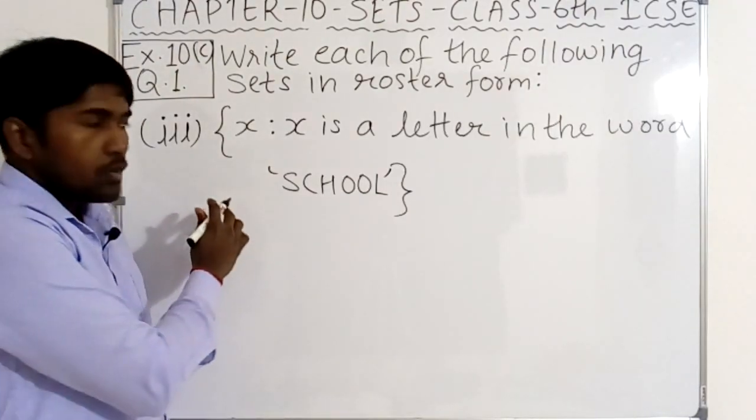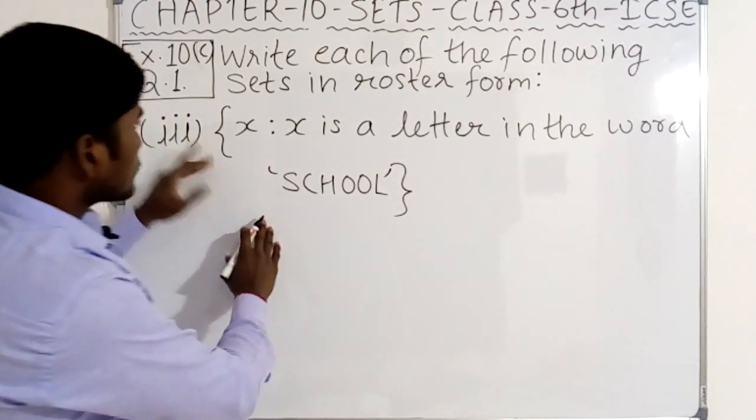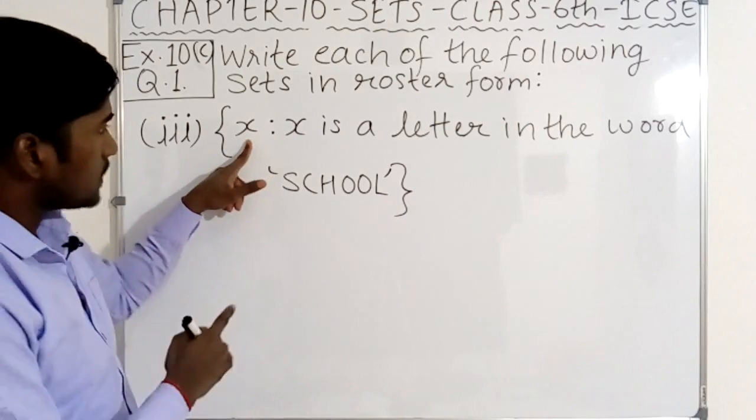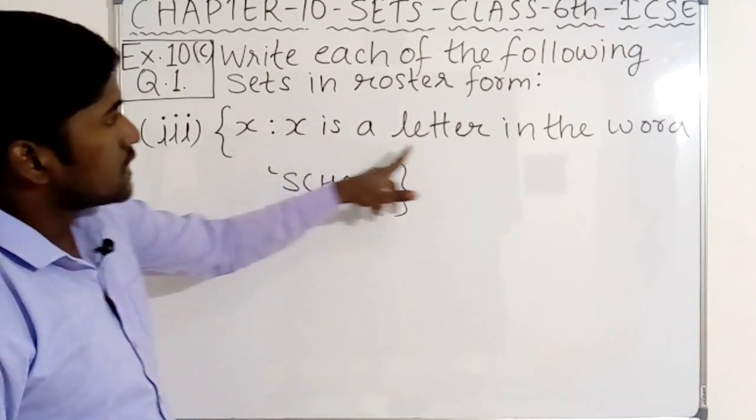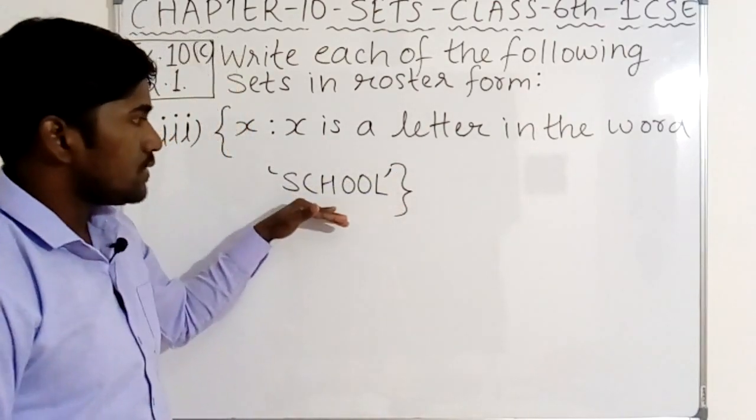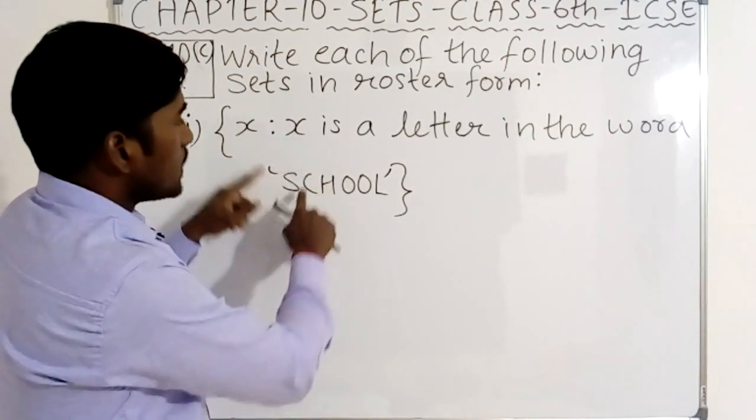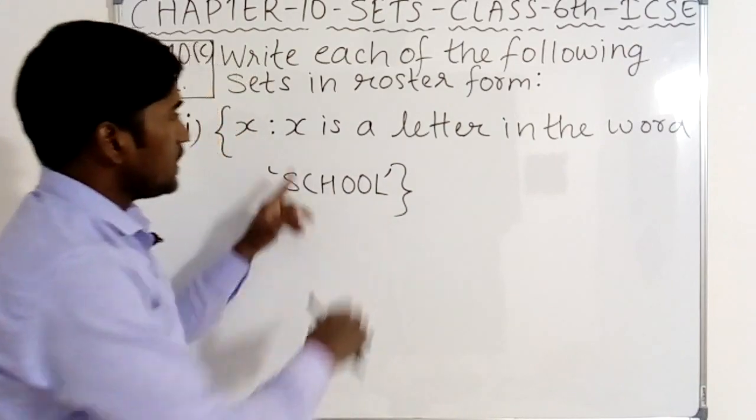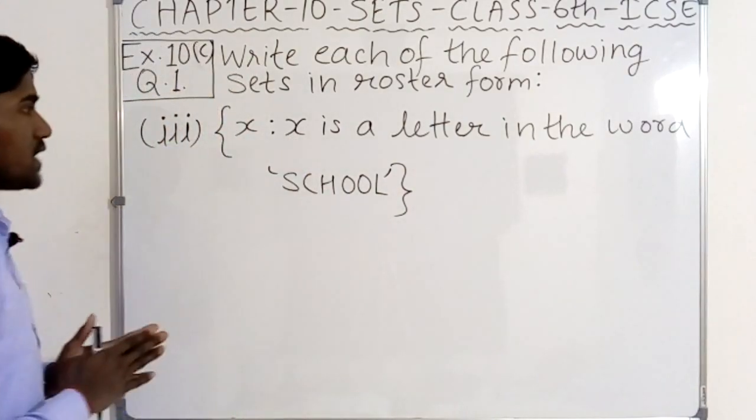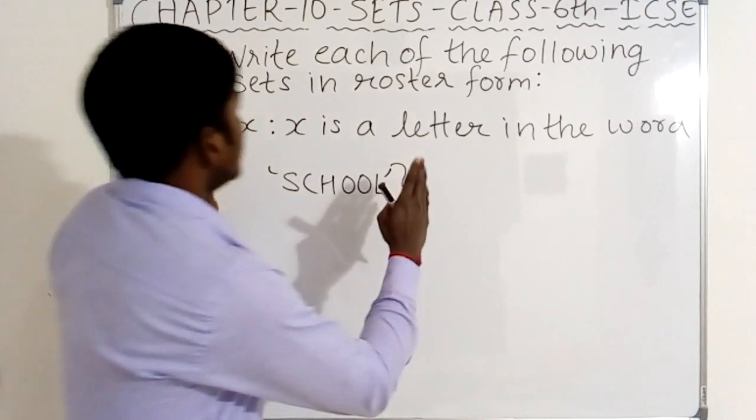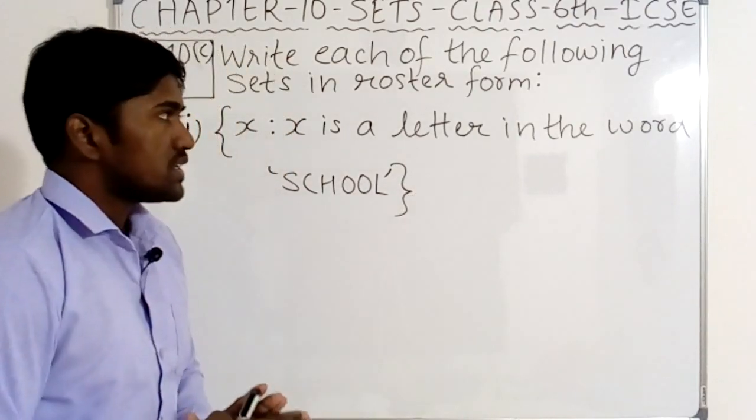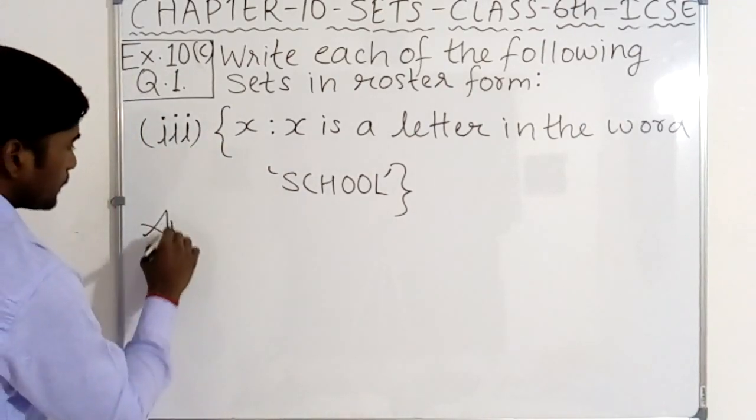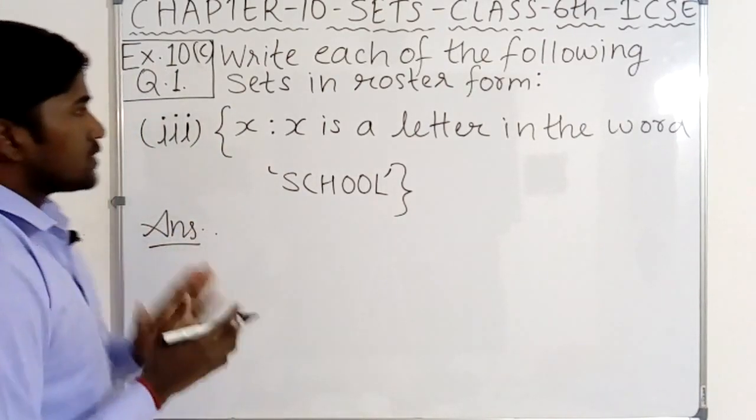Now see the third point. What is given? Here it is given, curly braces open, and here it is x is the element of this set such that x is a letter in the word school. Here x is the word school, this word letter is x. Now we have to write this set in roster form. Here is the set builder form.